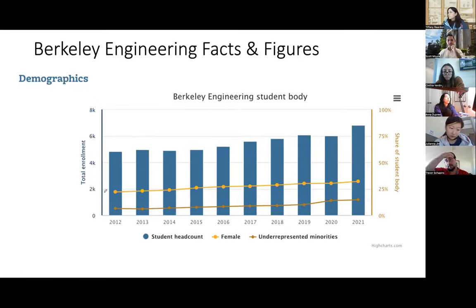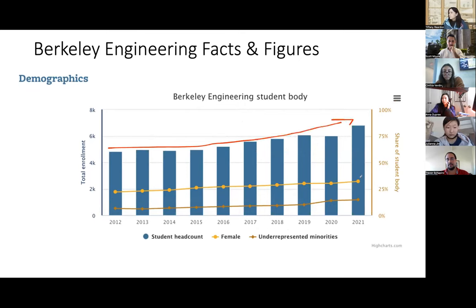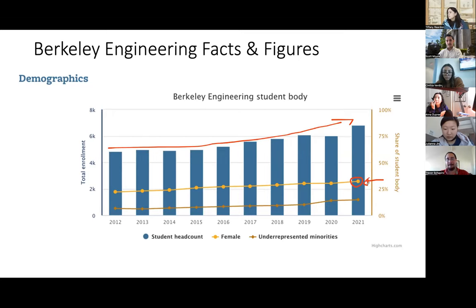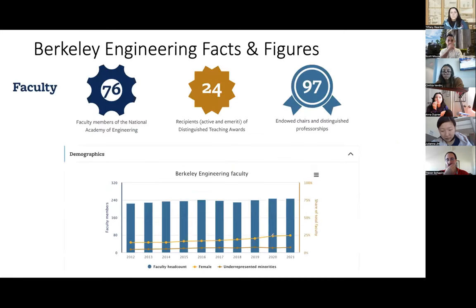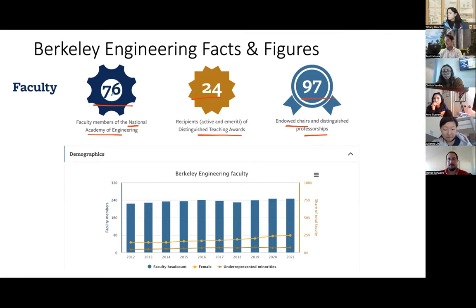Some facts and figures about the demographics of our student body: the total student headcount has generally been increasing. We're working hard to increase gender diversity — it has been going up, but is still not where it needs to be. In engineering science, our gender diversity is higher than what's reported at the college level — we're higher than 30%, but this still needs to improve. Our faculty are great, famous, get awards — national academy of engineering, distinguished teaching, endowed chairs. You're learning from leaders.